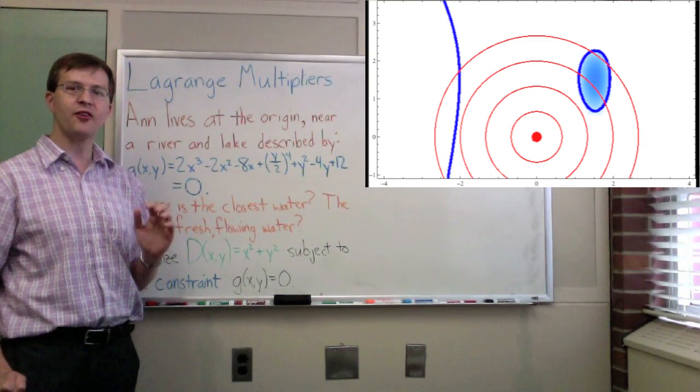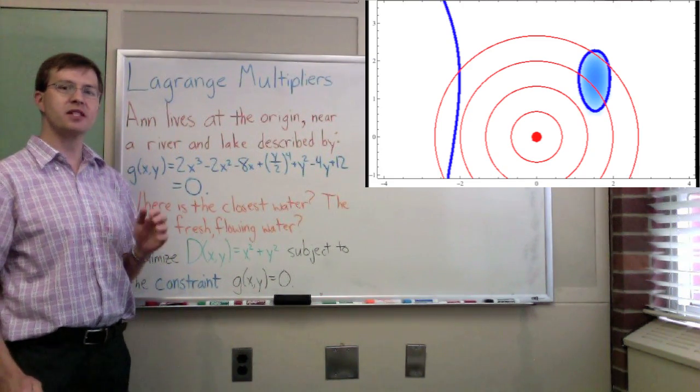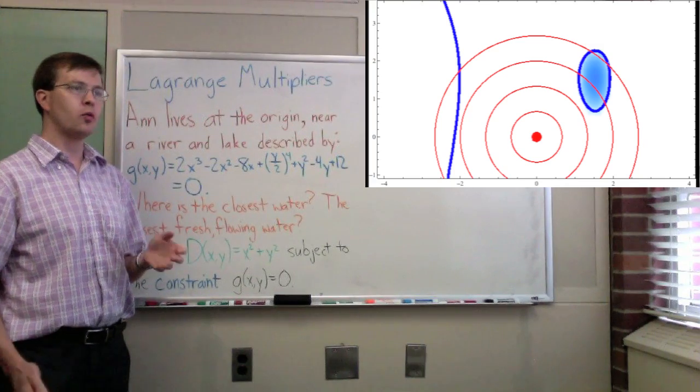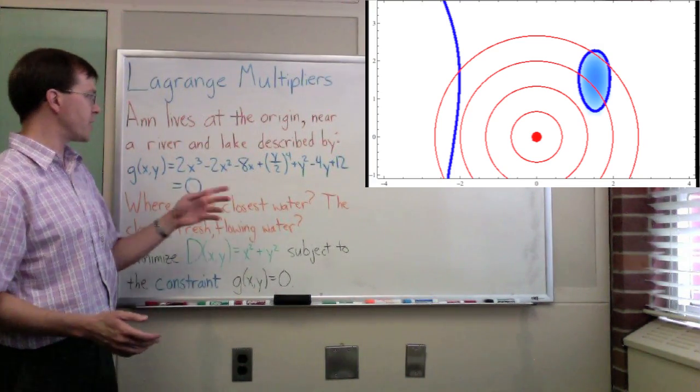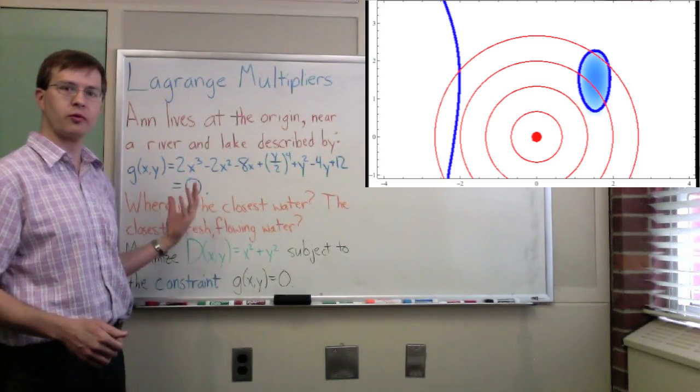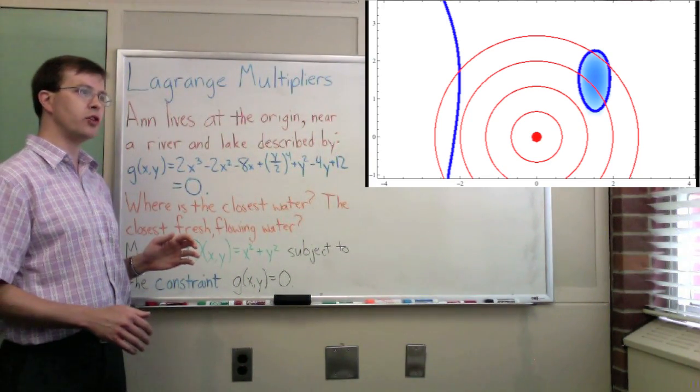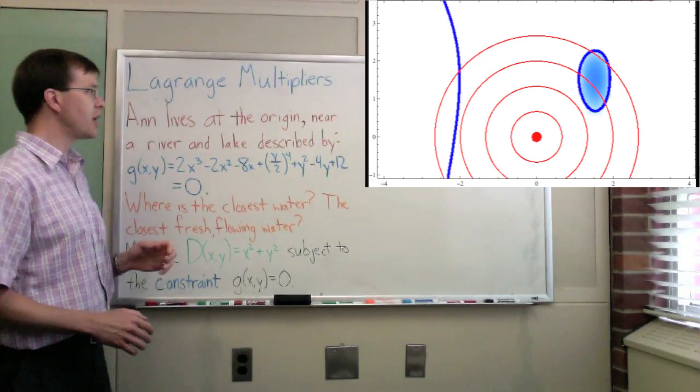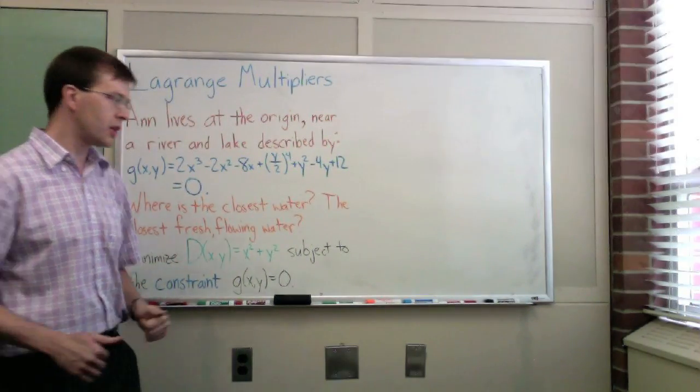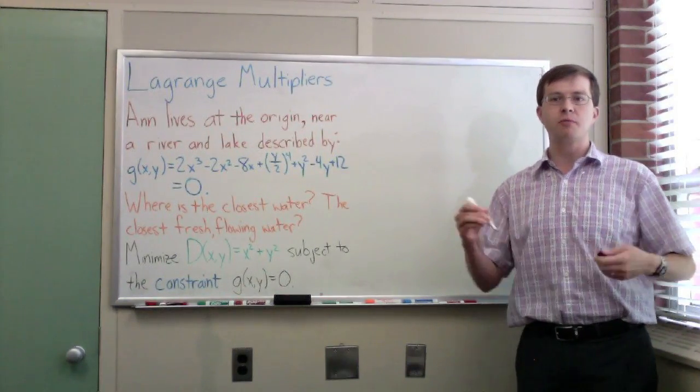But how do we find the specific points where that's true? How do we find the specific points where we go and where Ann should go to go to the closest point of the lake? Or if she wants fresh water, the closest point of the river? That's where Lagrange multipliers comes in. What we actually want to do is look for circles that will touch those points. So let me wander over here and actually start doing some Lagrange multipliers calculations.